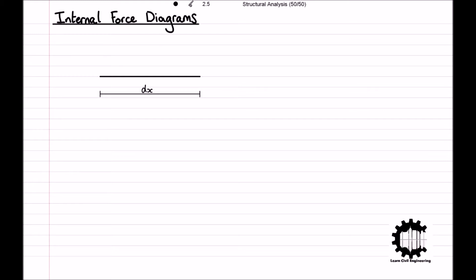Recalling the conventions for positive internal forces at either end of a bar, we can draw on the conventions for the positive internal forces at the left end of the section and the right end. As stated previously, the internal forces may not be constant along the length of the bar. If we denote the internal forces at the left end to be V, N, and M, corresponding to shear, axial, and bending respectively, then we must introduce a change in the internal forces for the right end.